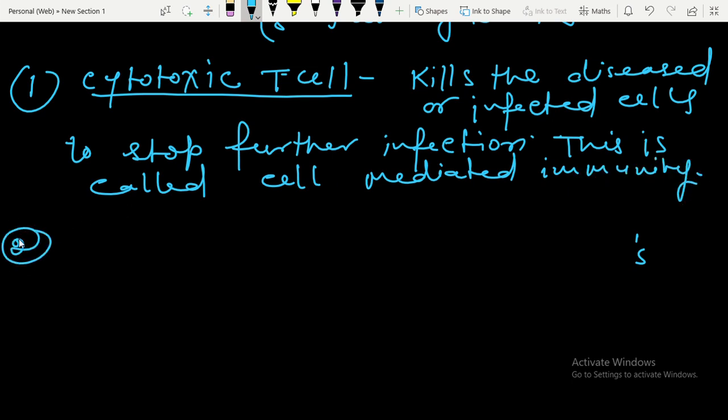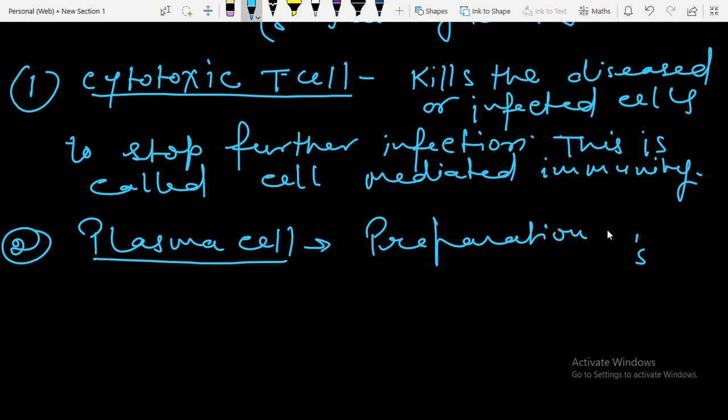Next, the functions of plasma cell. It starts preparing thousands of Y-shaped proteins called antibodies. So, preparation of antibodies.